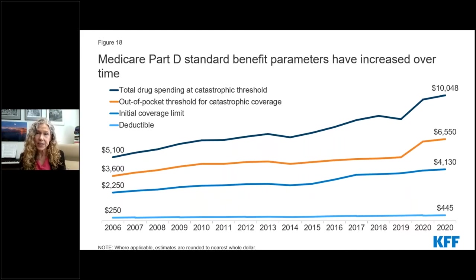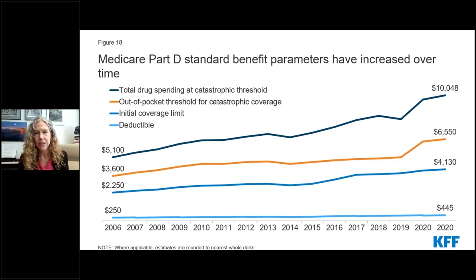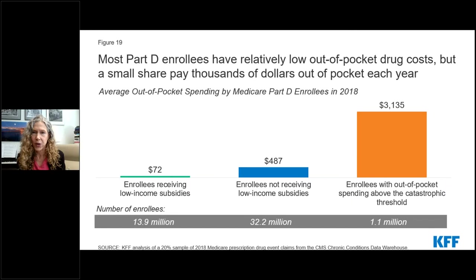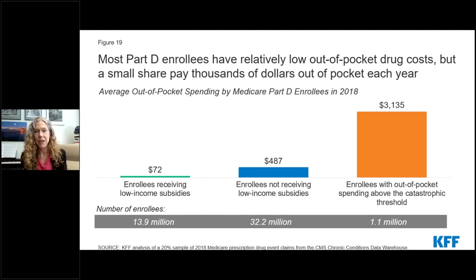Because the standard benefit parameters increase each year with the rate of drug spending growth per enrollee, the amount of out-of-pocket spending required to qualify for catastrophic coverage is now nearly two times higher than it was 15 years ago. On average in 2018, Part D enrollees who didn't receive low-income subsidies spent about $500 out-of-pocket on their prescriptions. But with no hard cap on out-of-pocket spending under Part D, a small share of enrollees face thousands of dollars in out-of-pocket drug costs each year, whether because they take a lot of prescriptions or because they take one or two really expensive drugs. In 2018, just over 1 million Part D enrollees had out-of-pocket spending above the catastrophic threshold, and their annual out-of-pocket costs averaged $3,100 — about 10% of median per capita income for people on Medicare.